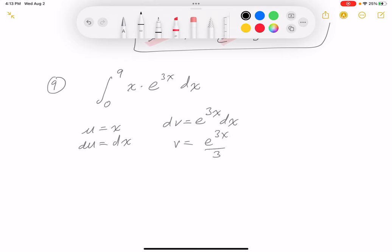Let's write this down. Equals uv, which is going to be x, e to the 3x over 3, evaluate it from 0 to 9. We'll do that later. Minus an integration from 0 to 9 of v du. So 1/3 e to the 3x dx.